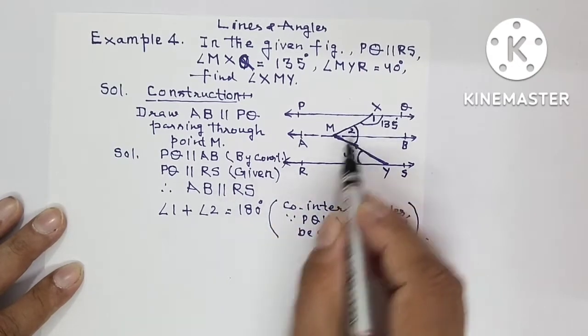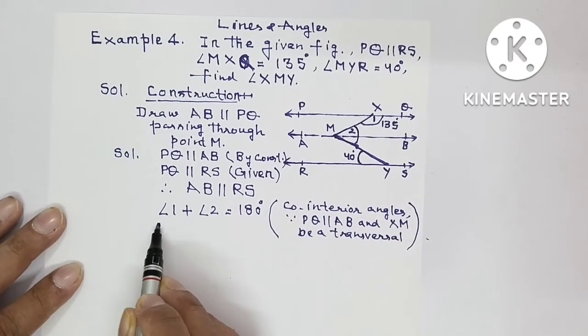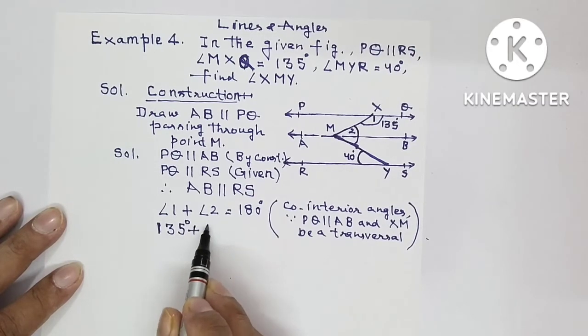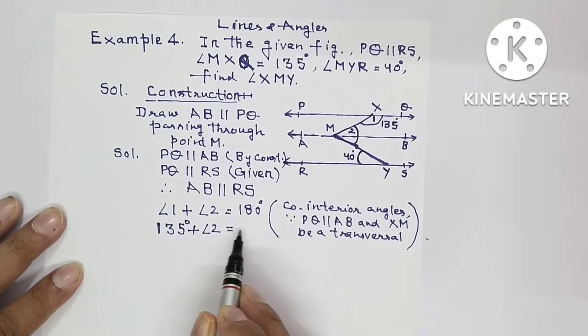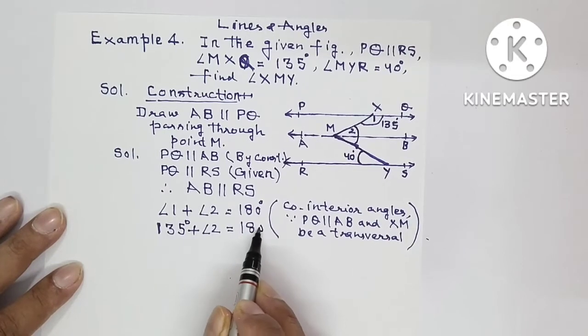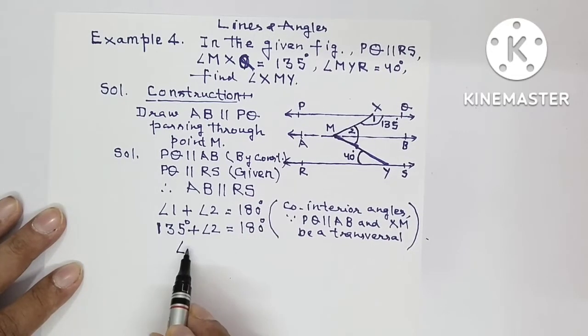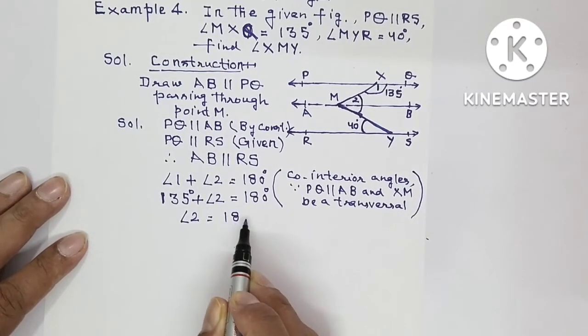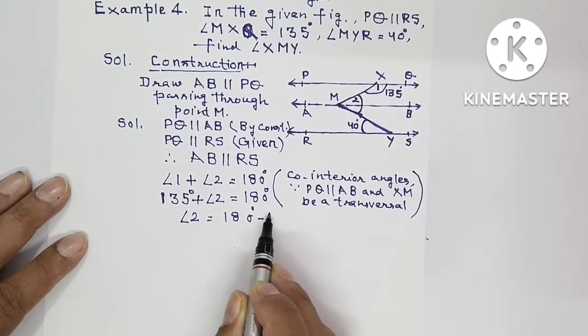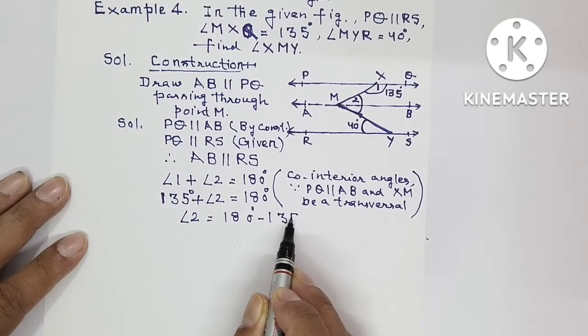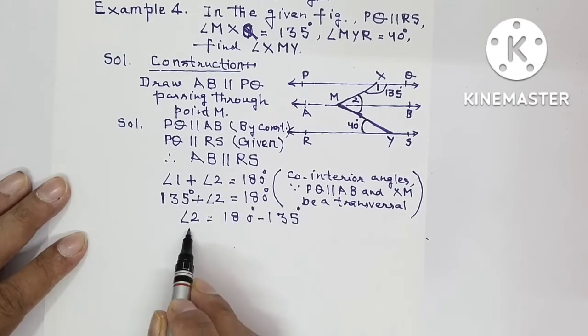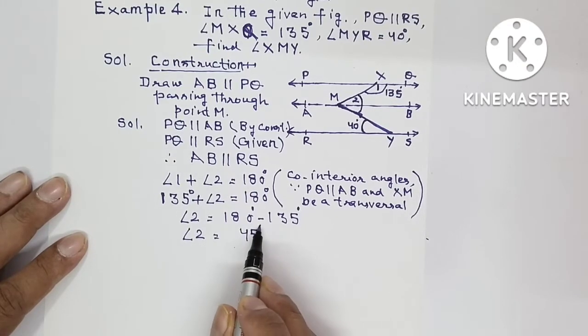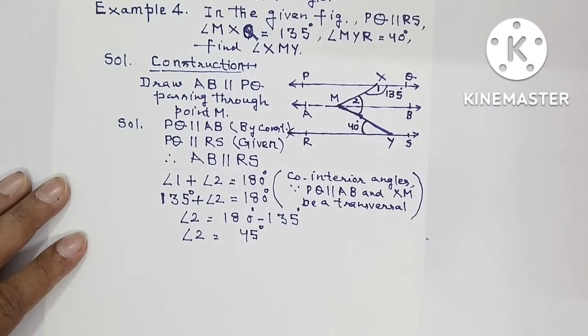Now angle 1 is 135 degrees. Substitute the value: 135 degrees plus angle 2 equals 180 degrees. So angle 2 can be found from here. It is equal to 180 degrees minus 135 degrees. So angle 2 is equal to 45 degrees.